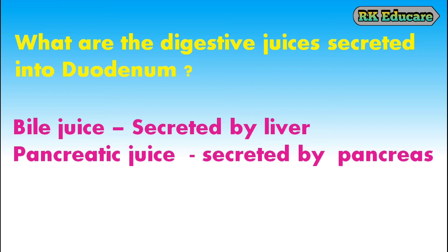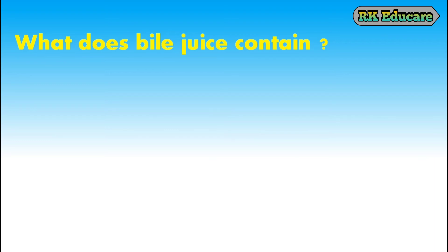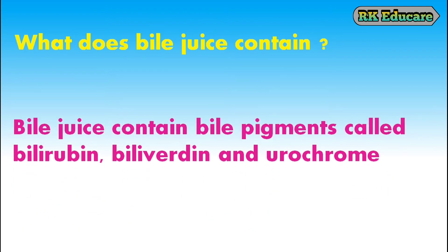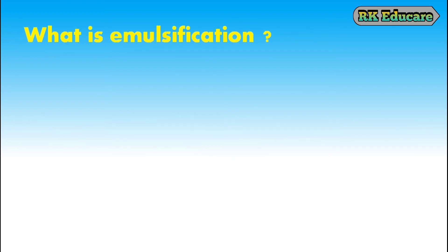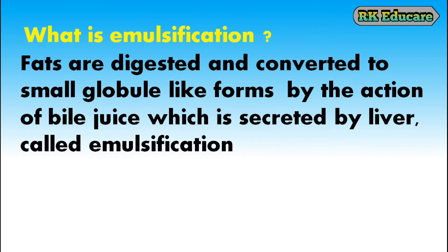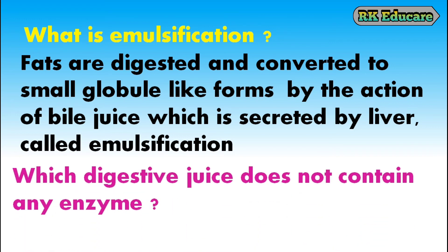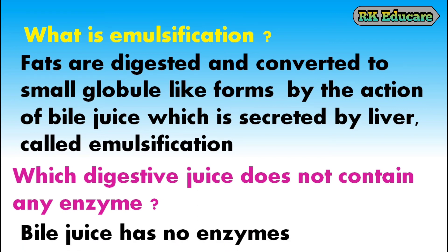Bile juice is secreted by the liver. Pancreatic juice is secreted by the pancreas. What does bile juice contain? Bile juice contains bile pigments called bilirubin, biliverdine and urochrome. What is emulsification? Fats are digested and converted to small globule-like forms by the action of bile juice secreted by the liver — this is called emulsification. Which digestive juice does not contain any enzyme? Bile juice has no enzymes.